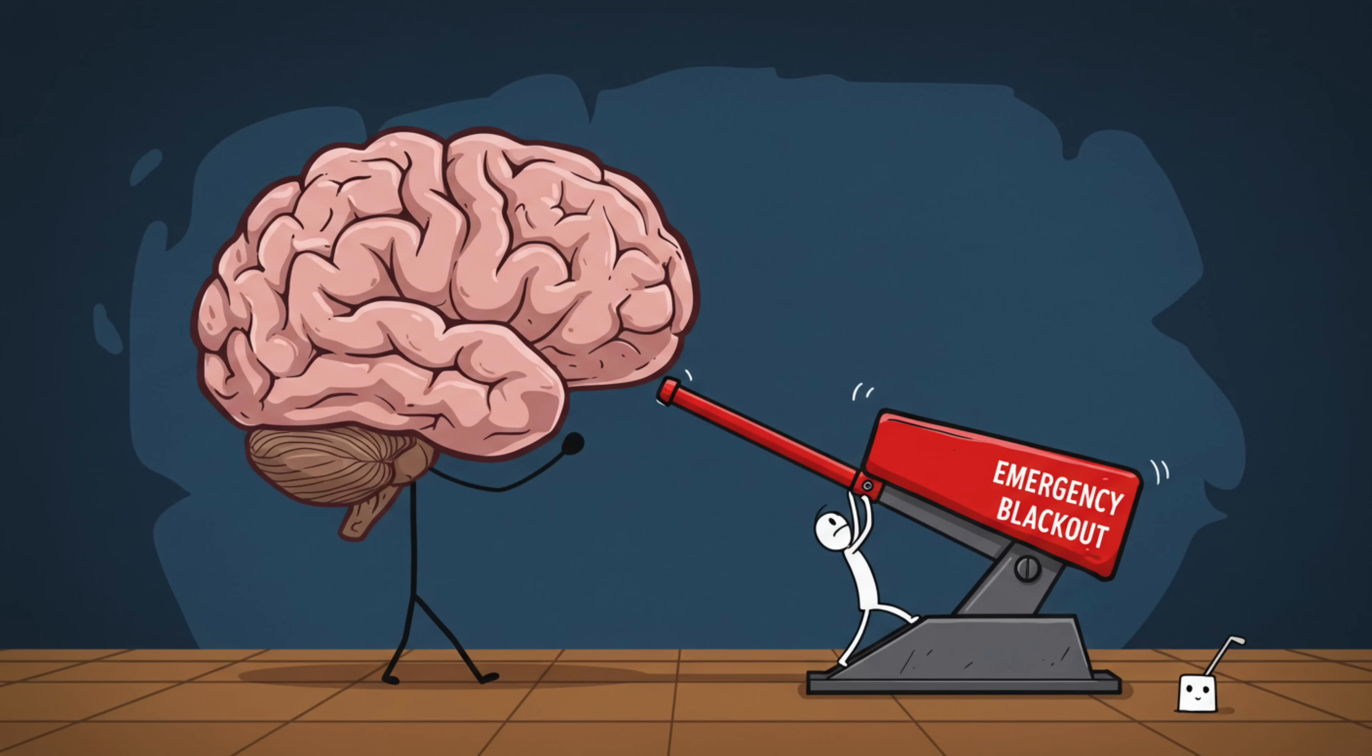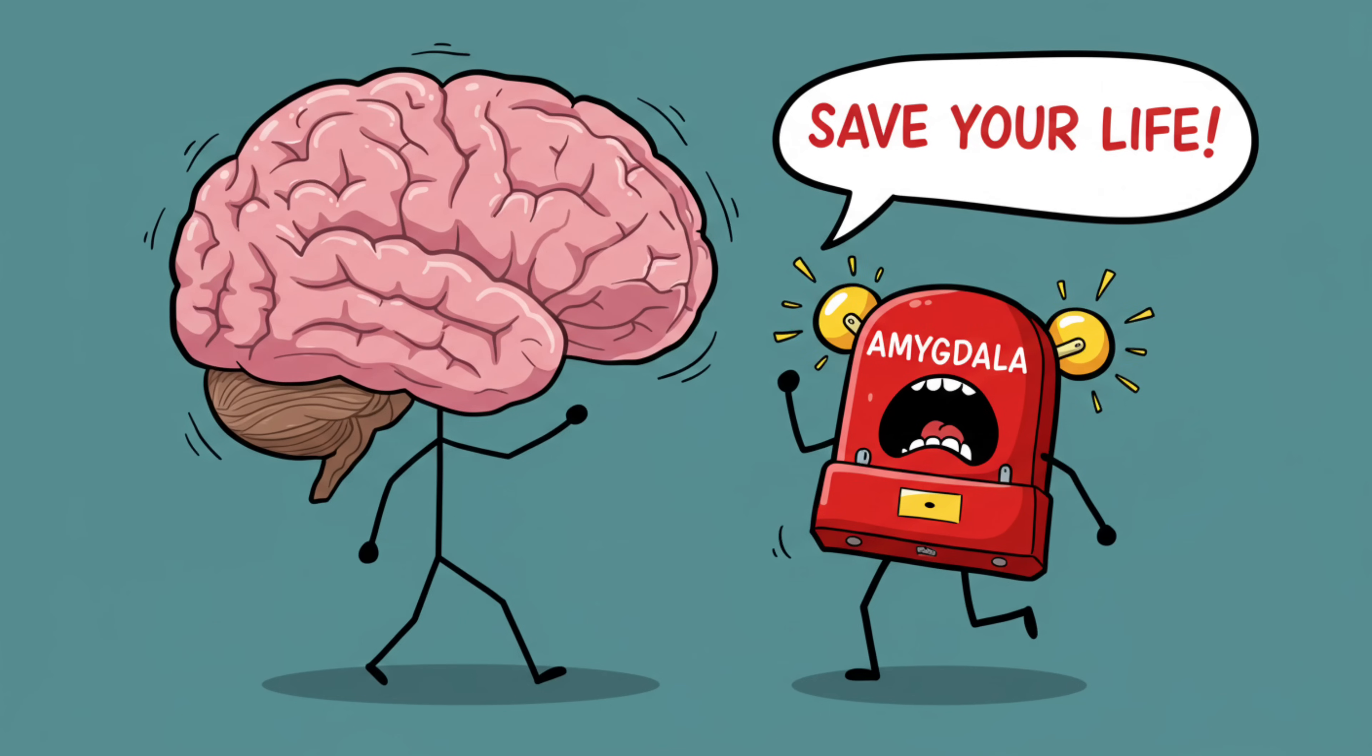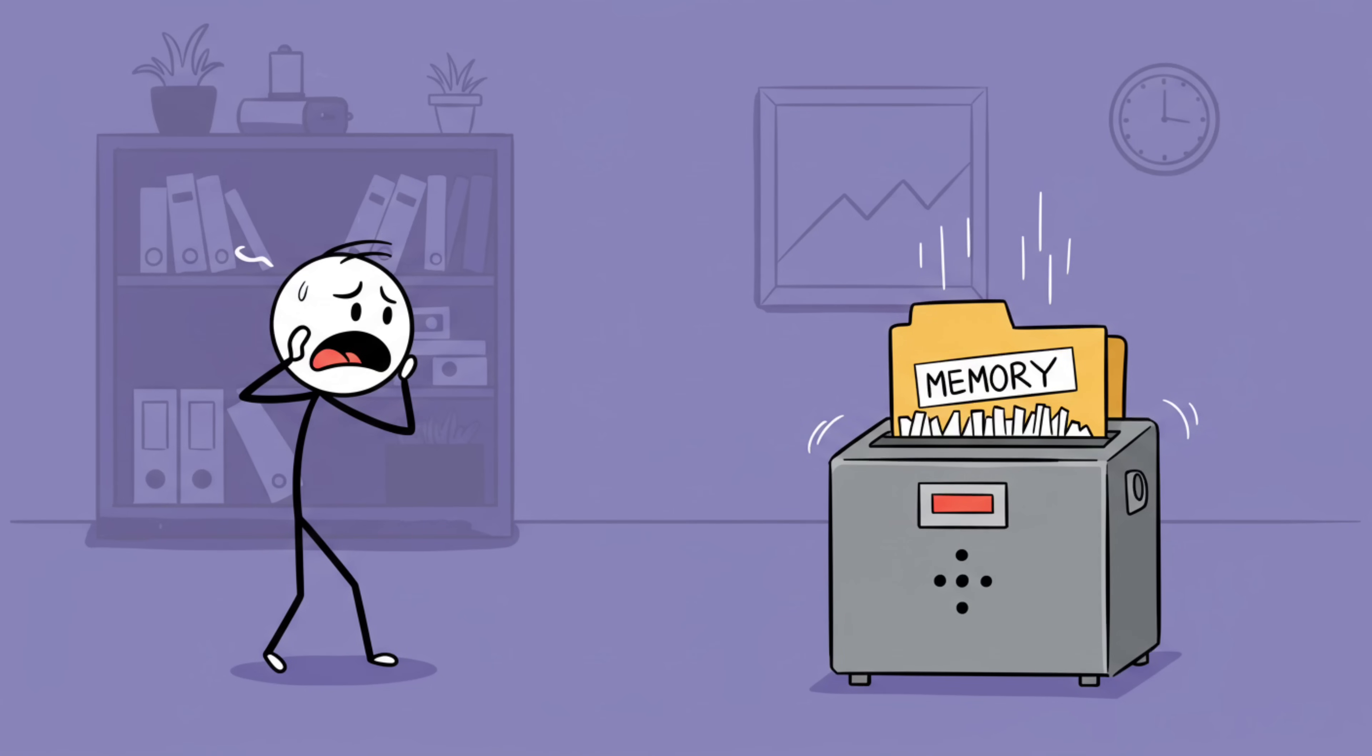That's not you being dramatic. That's your brain pulling the emergency blackout lever. When stress levels go nuclear, the hippocampus, our memory librarian, basically clocks out and takes a smoke break. Meanwhile, the amygdala, our overexcited alarm system, is screaming 'save your life' at max volume. The result? You react in the moment, but you don't get the memory file saved.